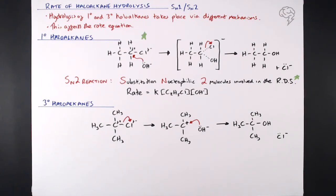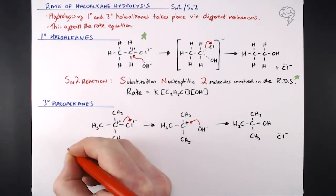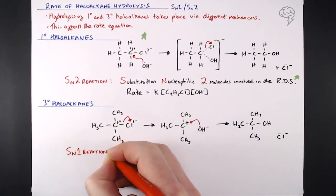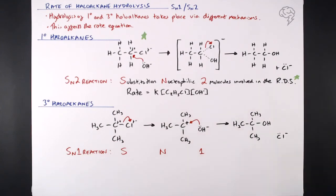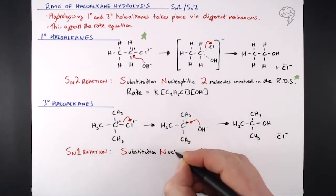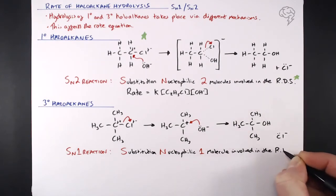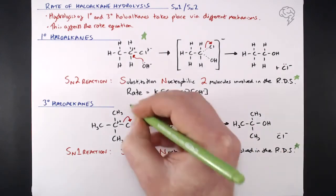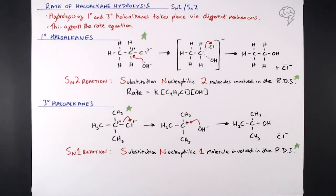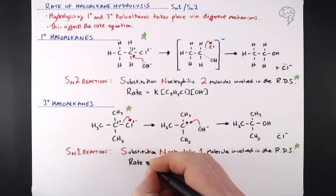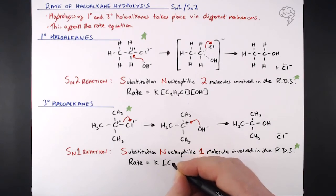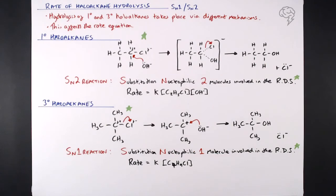This is the SN1 reaction. S stands for substitution, N for nucleophilic — same as before — but this time there is only one molecule involved in the rate-determining step. That first step, the heterolytic fission of the carbon-chlorine bond, is the rate-determining step, and no OH⁻ is involved. So only the halo alkane features in the rate equation: rate = k × [halo alkane] (i.e., C₄H₉Cl). The hydroxide ion does not appear in the rate equation.